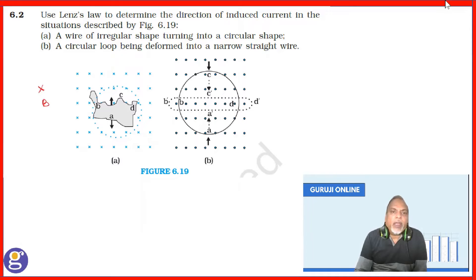Now this wire, once it starts turning into a circular shape means its surface area is basically increasing. And due to that, the magnetic flux crossing this loop perpendicular, that is also increasing. And because of this increase,